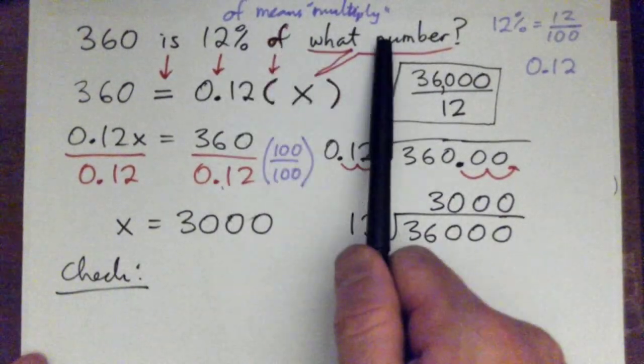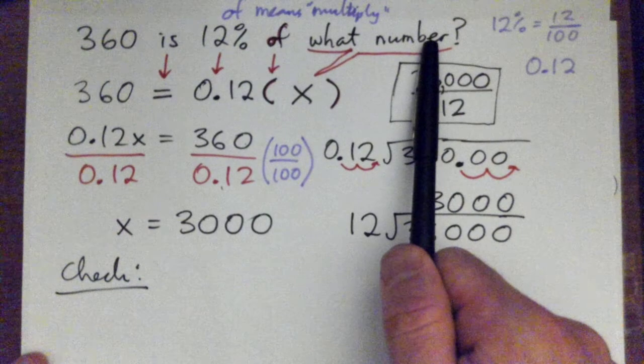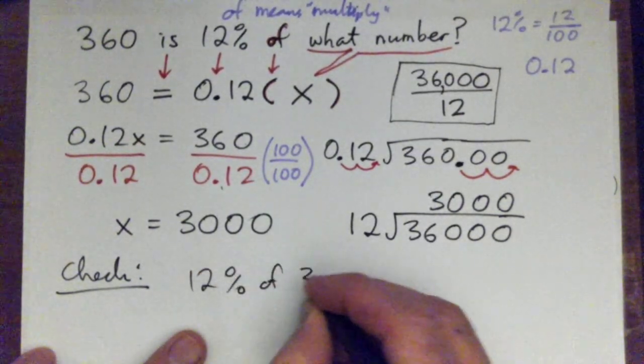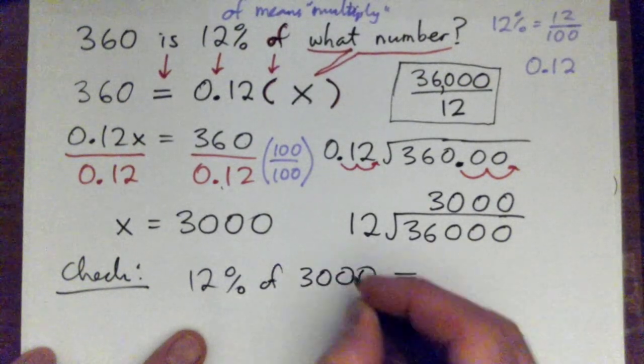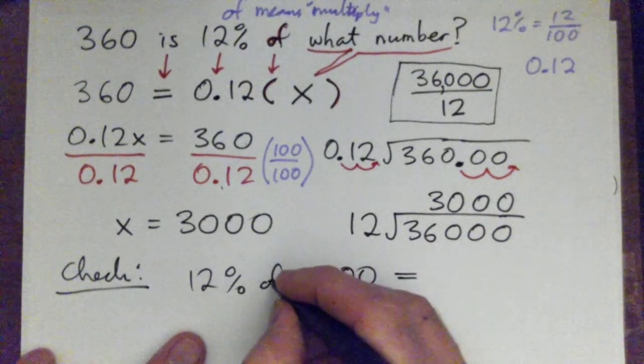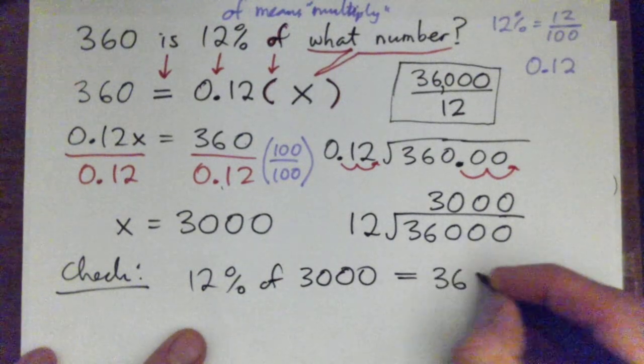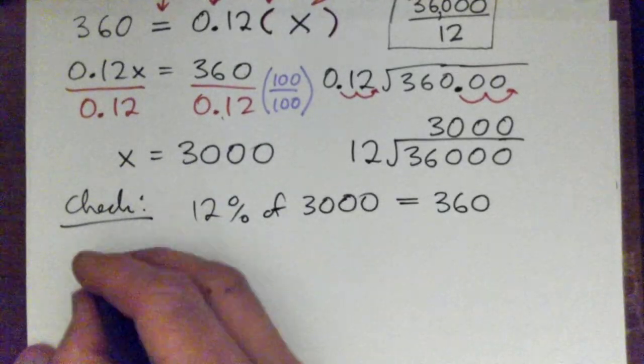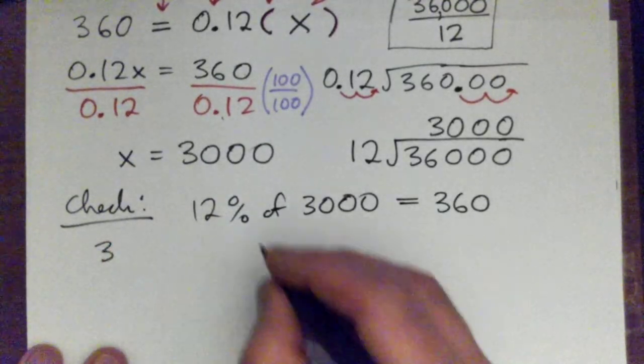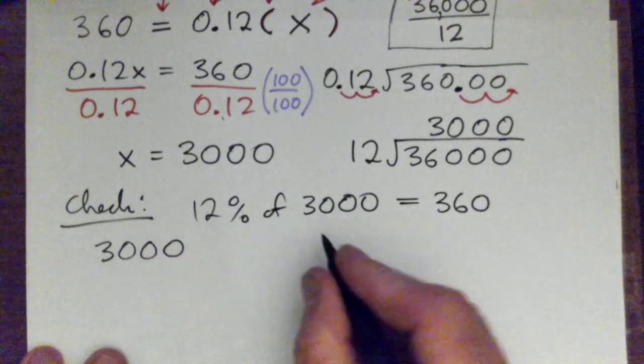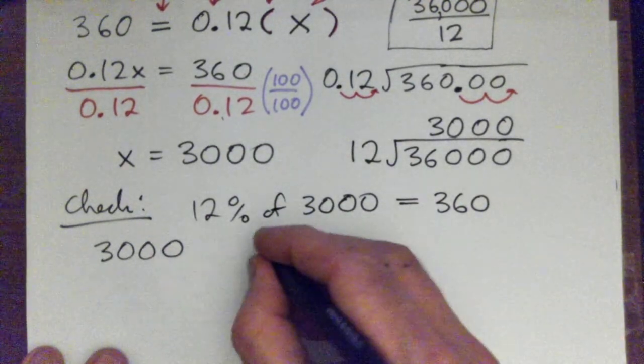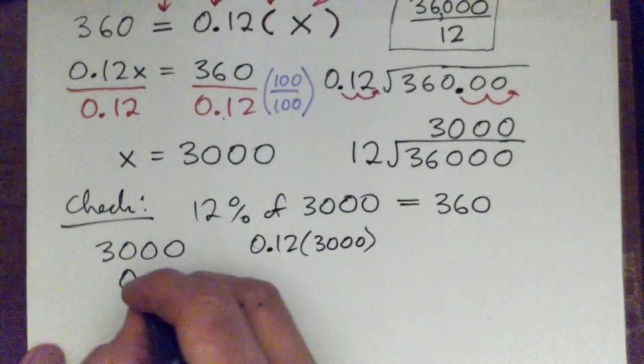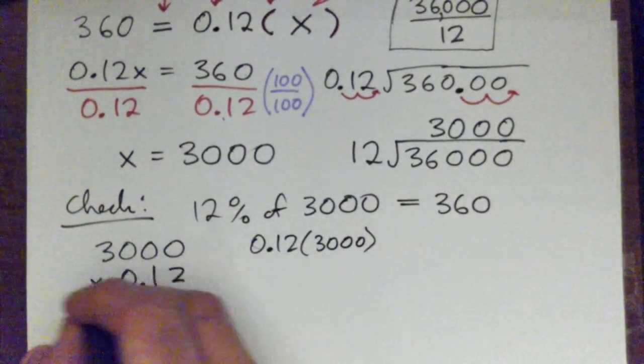12% of what number? 360 is 12% of what number. So in other words, if we get 12% of 3,000, that should be equal to what? 360, good, yeah. So 12% of 3,000 - how do we get that? Multiply. Good, multiply that by 12. So in other words, 0.12 times 3,000.